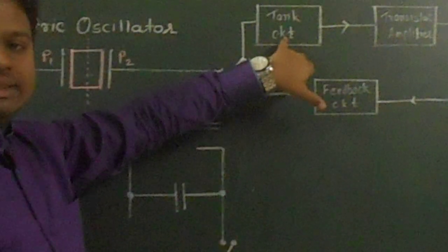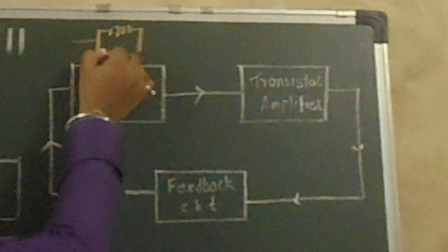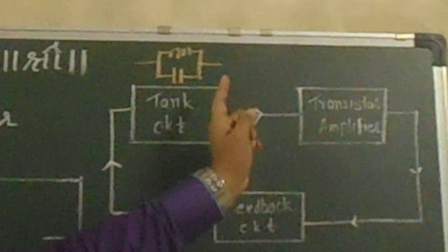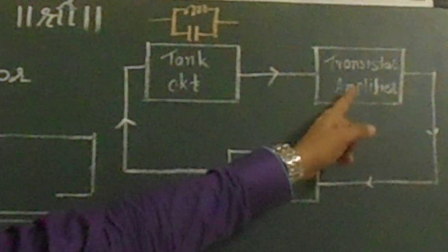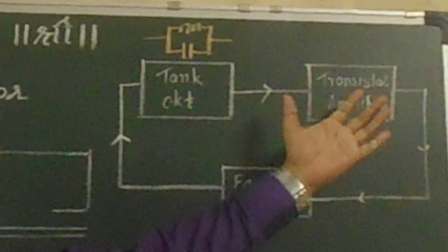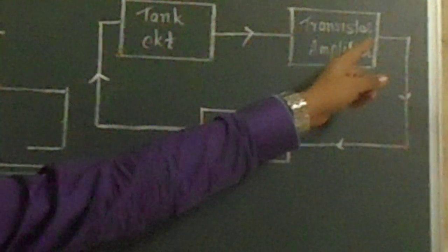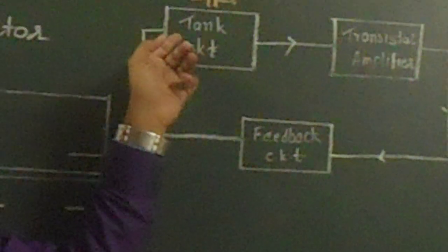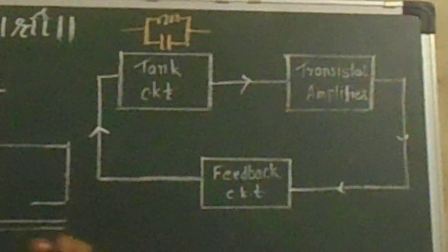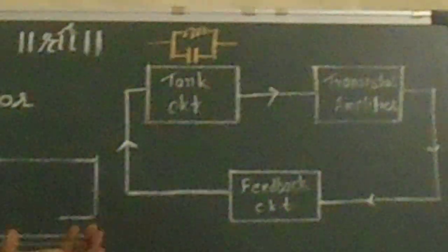The first component is a tank circuit. What is a tank circuit? The parallel combination of an inductor and a capacitor. The role of a tank circuit is to produce the AC wave. The output of a tank circuit is given to the transistor which acts like an amplifier. The role of the transistor is to amplify the given signal. The third component is a feedback circuit. The role of a feedback circuit is to feed some part of the output back to the input of the tank circuit, so as to obtain an output of constant amplitude or constant power.